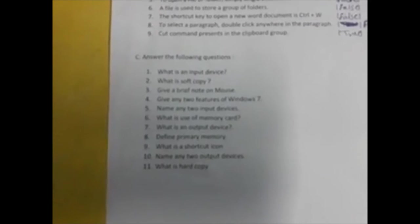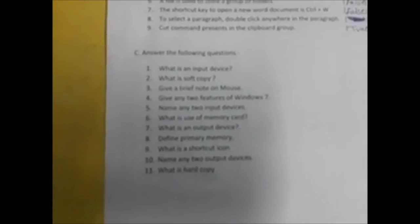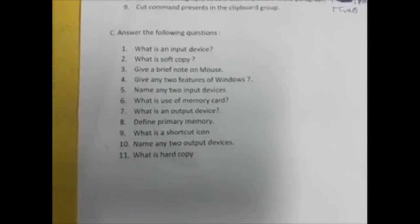Next is what is an output device? Output device is used to give output after processing. Processing ke baad jo bhi result humko show hota desktop pe that is output. Next is what is a shortcut icon? Shortcut icon provides an easy and quick method to open applications or software that we use frequently. Shortcut icons humko easily application open kar sakta hai jo frequently use karte hain. We can create the shortcuts and paste them on our desktop. Easily hum apne shortcut bana ke desktop pe rakh sakte hain taki humko frequently use kar sakte hain, easily use kar sakte hain, bahut hi teji se software application ko use kar sakte hain.